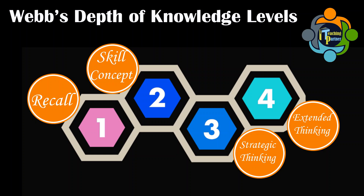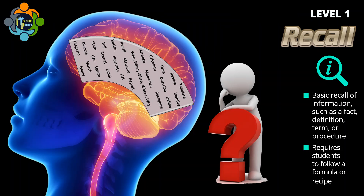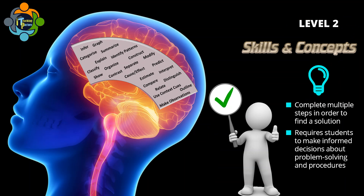Level one is Recall or Reproduction. Level one is useful for introducing information to students or checking for understanding about foundational information needed for higher-order thinking. Level one activities can also help teachers understand the prior knowledge and experience of their students. Activities at this level include: draw, define, calculate, memorize, identify, who/what/when/where/why, tabulate, and recognize. This level is usually used in starter activities for recalling prior knowledge.